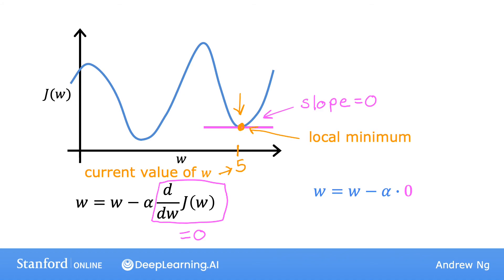And this is the same as saying, let's set w to be equal to w. So this means that if you're already at the local minimum, gradient descent leaves w unchanged, because it just updates the new value of w to be the exact same old value of w. So concretely, let's say if the current value of w is five, and alpha is 0.1, after one iteration, you update to w as w minus alpha times zero, and it is still equal to five.